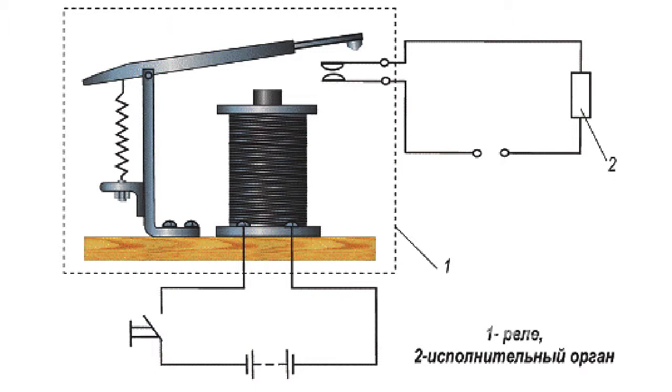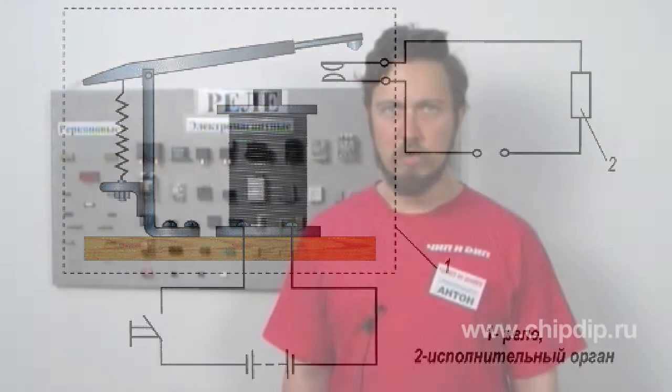When the current is switched off, the core demagnetizes. The spring returns the armature to its original position and switches the contact.